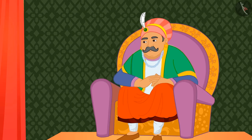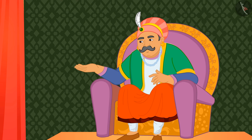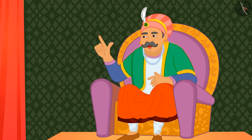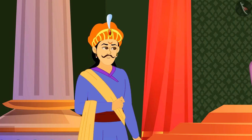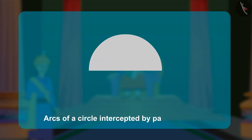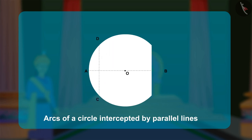Again, Akbar asked Birbal, 'How will you show arcs of a circle intercepted by parallel lines through this paper?' Birbal thought a little and started folding a diameter AB of the given circle. He then folds two chords, each perpendicular to AB like this.